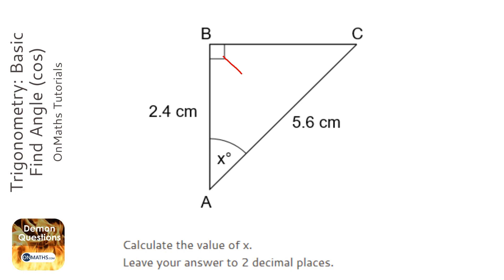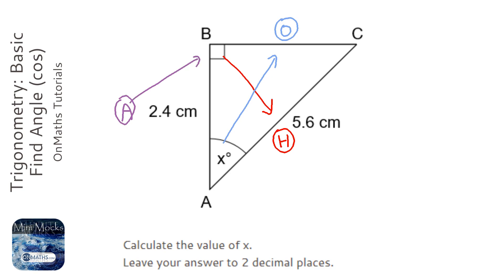In trigonometry, the first step is to label the hypotenuse, which is opposite the right angle. Then we label the opposite, which is opposite the marked angle, and the adjacent, which is the last one left between the right angle and the marked angle.